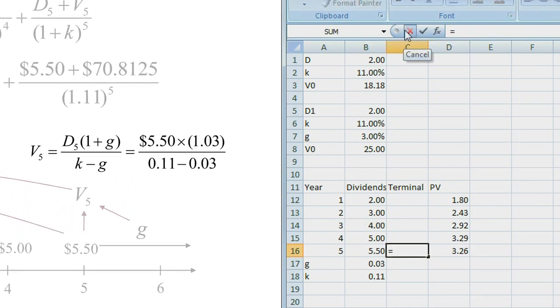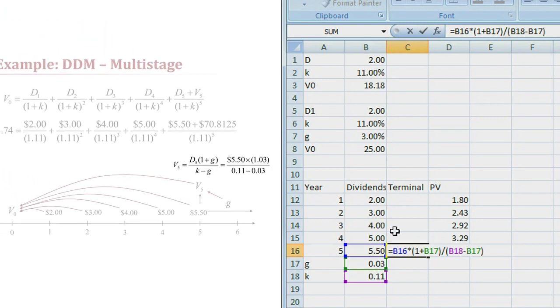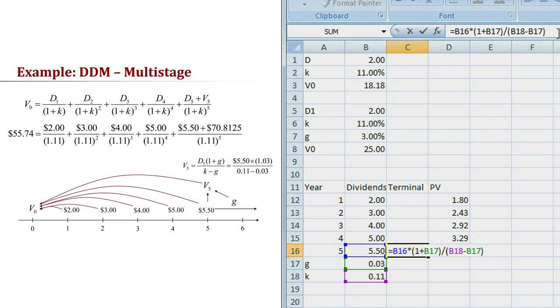The terminal value is just the dividend year 5 times 1 plus the growth rate divided by the discount rate minus the growth rate. Notice that I've been careful to put parentheses where they're necessary. And there you see the $70.81 that we had calculated previously.